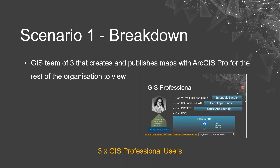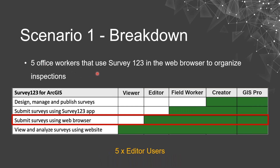So we'll add three GIS professional user types to our tally. Next, the five office workers need to use Survey123 in the web browser — not the native app. Submitting surveys using the web browser only requires editor level privileges and above. So while we could grant them field worker user types, we can get away with editor level, which may lead to some cost savings. We'll add five editor users to our tally.